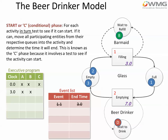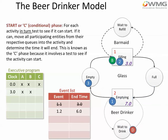Can we start activity one? Yes, because we've got entities in the participating queues. We move those entities into the filling activity and determine the end time — current clock time three plus duration three equals six. So in the event list we've got one dot two, the end event for activity one for glass two, at time six. We can also start emptying because we now have a full glass; the beer drinker can be scheduled as activity two for glass one, two dot one, with end time three plus seven equals ten. This is called scheduling events — we've scheduled two events, one at six minutes and one at ten minutes.